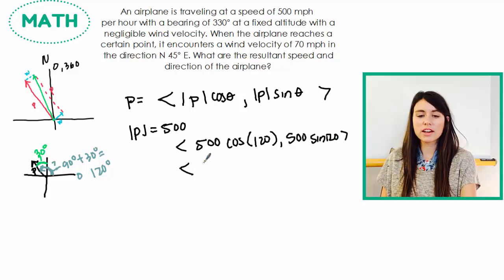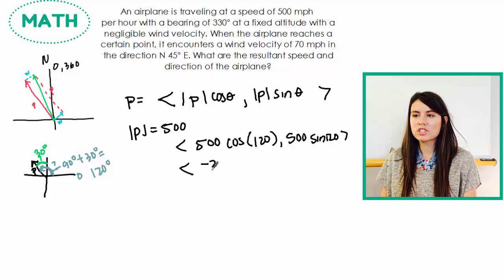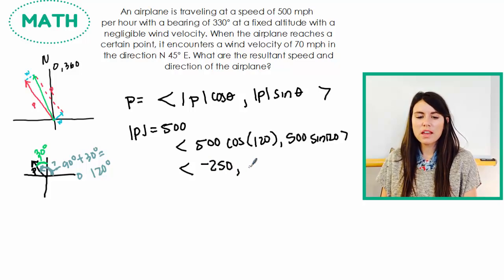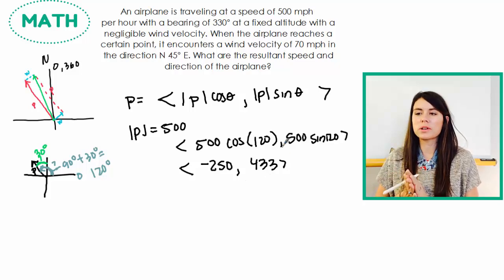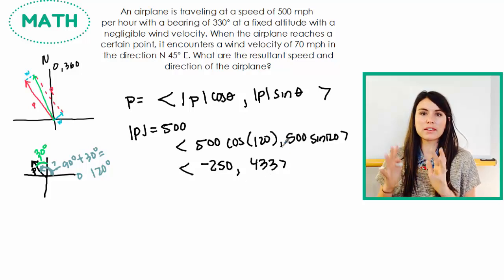And then I just am going to use a calculator from there to figure out these measures. So the vector of the airplane is going to be negative 250 and then 433. I'm just going to round to the nearest whole number. So we know the components of the plane. Awesome.